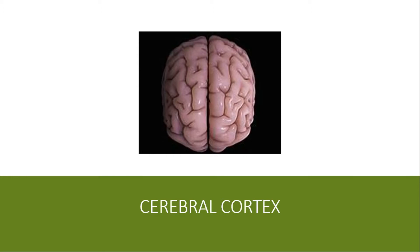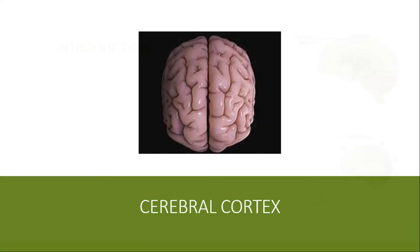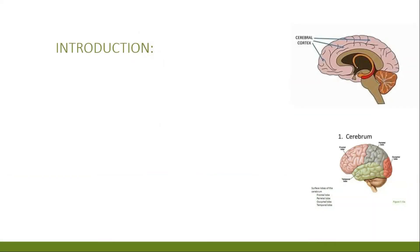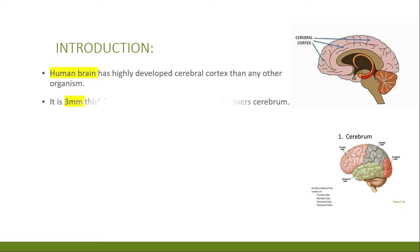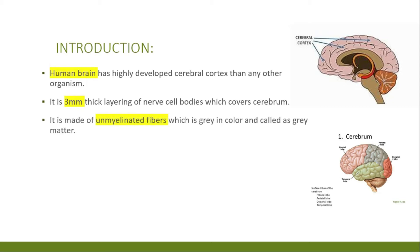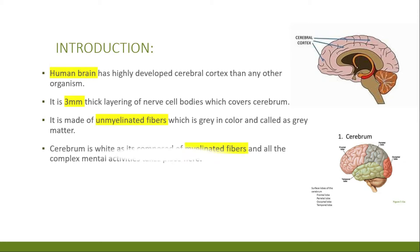Hello everyone and welcome back to my channel. Today's video is about the cerebral cortex. In the human brain, the cerebral cortex is highly developed compared to any organism. It is a thick layer of nerve cell bodies, about 3mm thick, and covers the cerebrum. The cerebral cortex is grey because it consists largely of nerve cell bodies and unmyelinated fibers — this is why it is called grey matter.